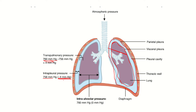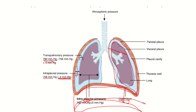Normally at the end of expiration, intrapleural pressure is negative at minus 4 mmHg. During inspiration, the diaphragm moves down, pulling the parietal and visceral pleura downward, so the space becomes larger and the pressure drops further — from minus 4 to minus 6 or minus 7 mmHg. So at the end of expiration it is minus 4, and at the end of inspiration it is minus 7; in both cases intrapleural pressure is negative.